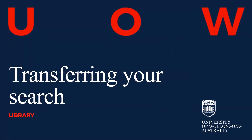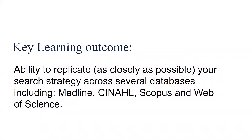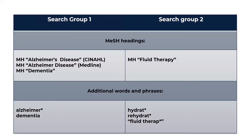This video describes a method of systematically transferring a planned search across different databases including CINAHL, MEDLINE, Scopus and Web of Science. For each part of my topic I have already identified relevant medical subject headings in CINAHL and MEDLINE, as well as alternative words, synonyms and spelling variations found in the titles and abstracts of useful journal articles.